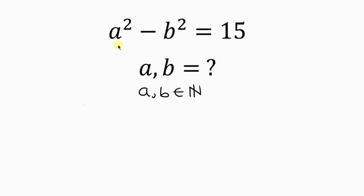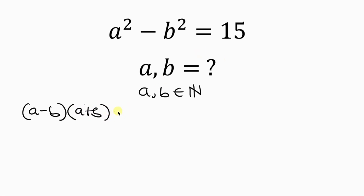Notice that the left-hand side is of the form of difference of two squares. So A squared minus B squared can be written as A minus B times A plus B, and this is equal to 15. Now notice that we have two factors on the left that are multiplying to give 15, so our next step will be to find the factors of 15.